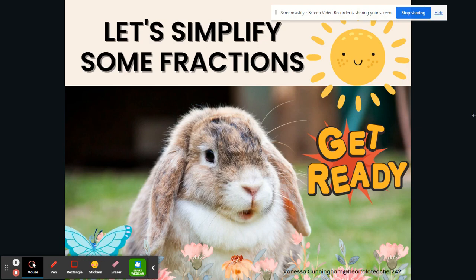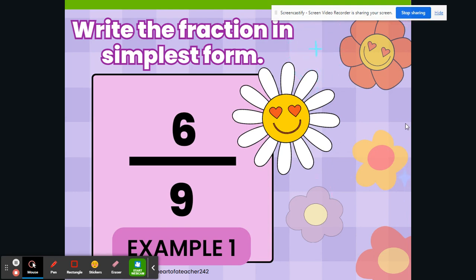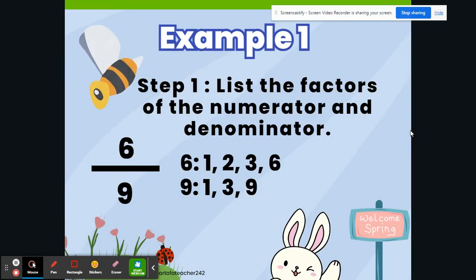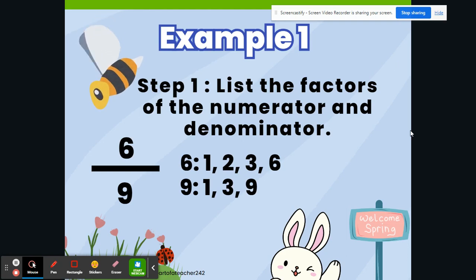Let's simplify some fractions. Here we have our first example — we need to write this fraction in simplest form. This fraction is 6 ninths. Our first step when simplifying a fraction is to list the factors of the numerator and denominator. So we have the numerator 6, and the factors of 6 are 1, 2, 3, and 6. We also have our denominator 9, and the factors of 9 are 1, 3, and 9.